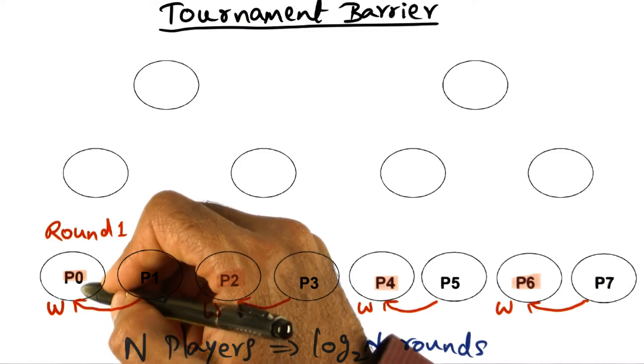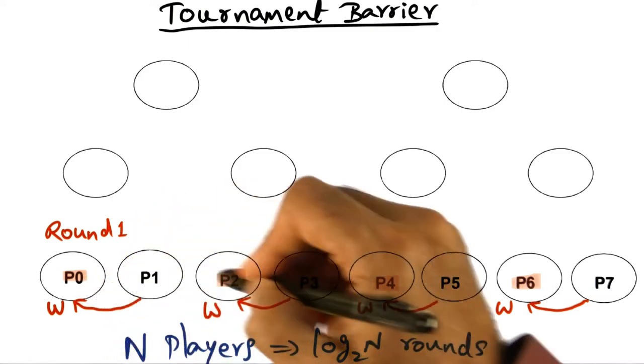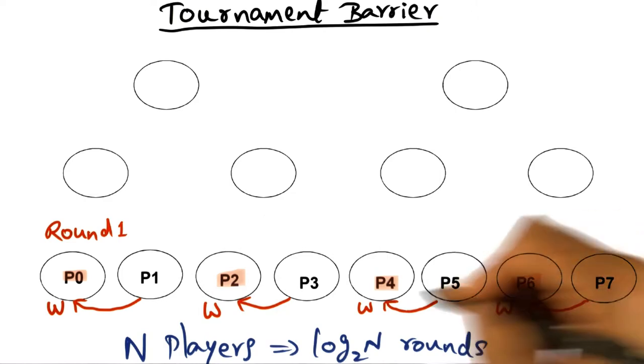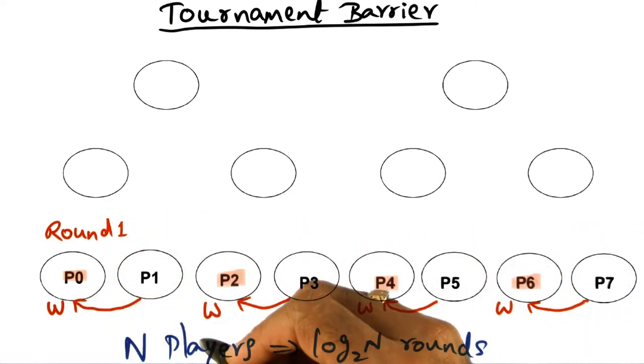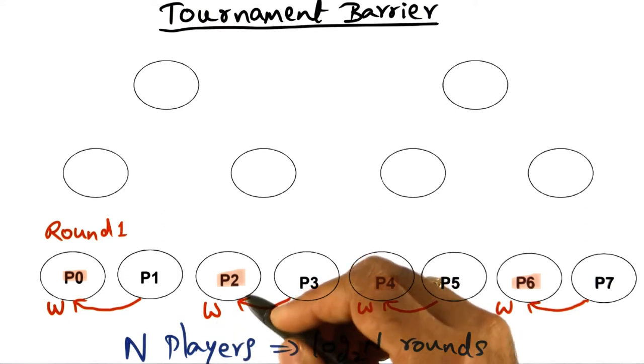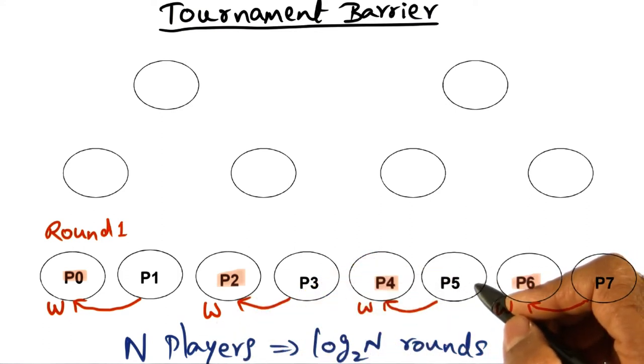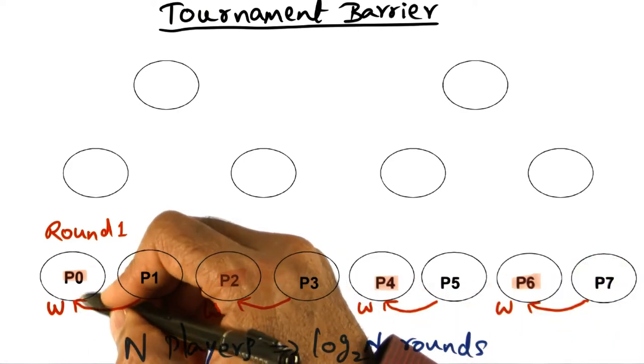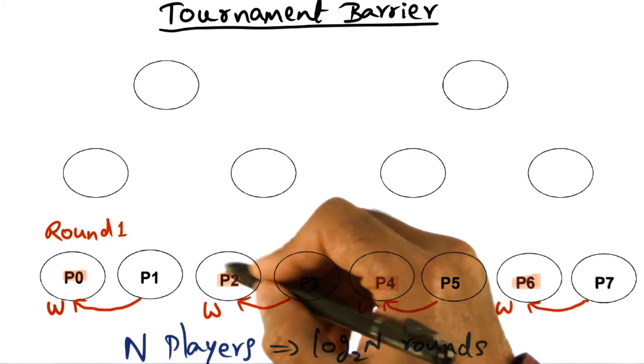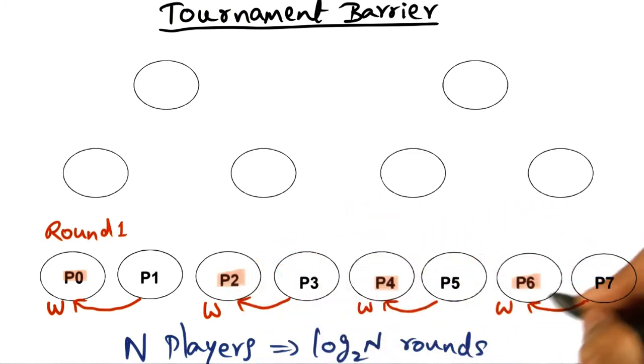This is the idea behind match fixing, that the spin location for each of these processes, P0, P2, P4, and P6, the winners in the first round, is predetermined. And that is very useful, especially if you don't have a cache coherent multiprocessor. If you have NCC NUMA machine, in that case, it is possible to locate the spin location in the memory that is very close to P0, P2, P4, and P6 respectively. That's the idea behind this match fixing.